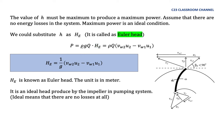So we could write that power equals rho G Q HE, the Euler head, the theoretical head is equal to rho Q, V world 2, U2 minus V world 1, U1.